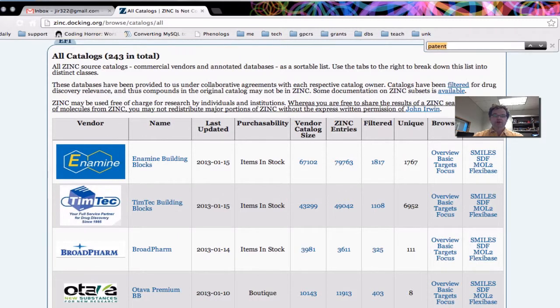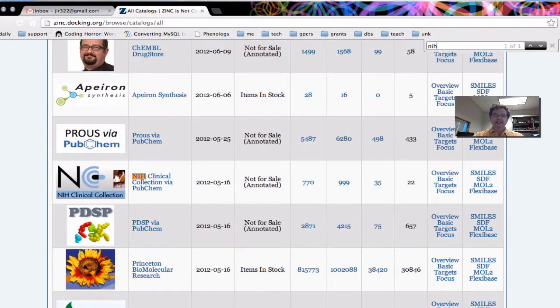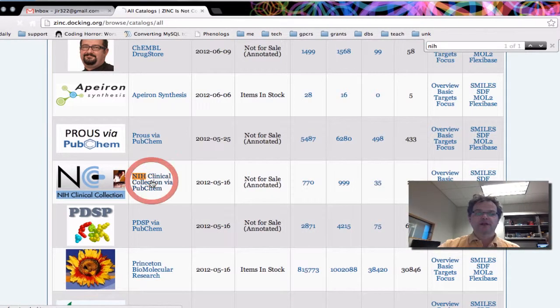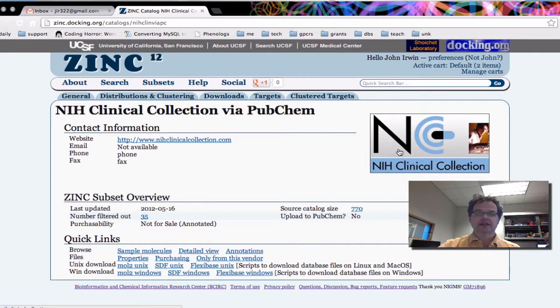So we're going to search for NIH. And here's the NIH clinical collection via PubChem. So we're going to click on that. And this is a collection of compounds that the NIH has made available and have appeared in a number of papers.